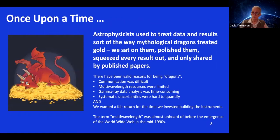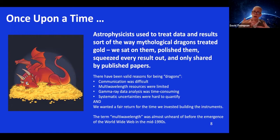So things have changed. The first four things I listed have really changed: communication is now possible electronically; we have lots of multi-wavelength resources; gamma-ray data analysis, thanks to computing, has improved; and systematic uncertainties now have good modeling. The last item — we still want a fair return for the time we invest building instruments — remains. But the other reasons for being dragons have largely disappeared.